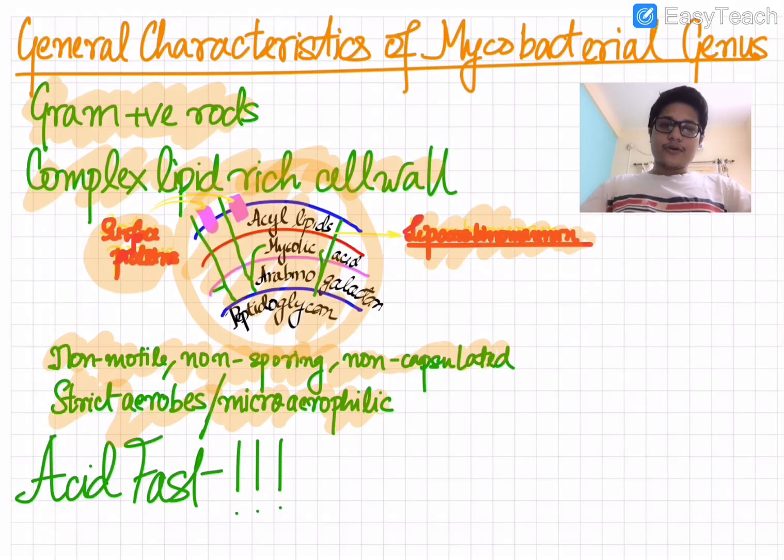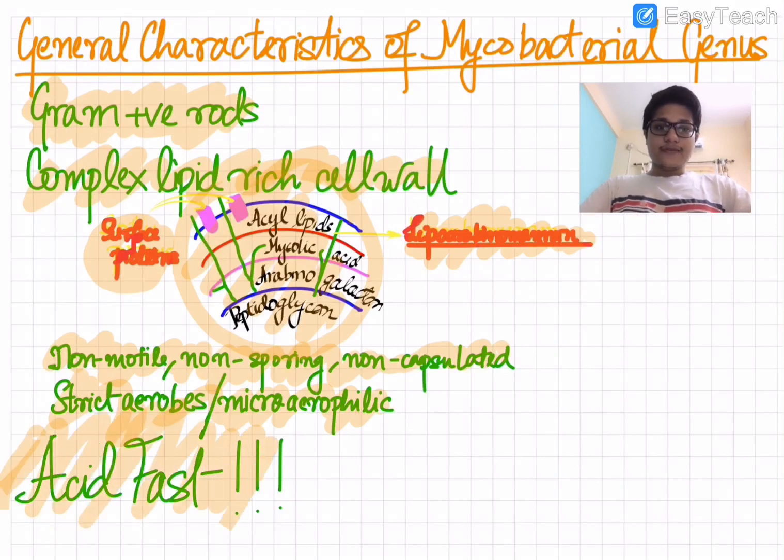We have to remember that these are non-motile, non-sporing, and non-capsulated bacilli which are strict aerobes and/or microaerophilic. But the most important property that we have to discuss here is the property of acid fastness.